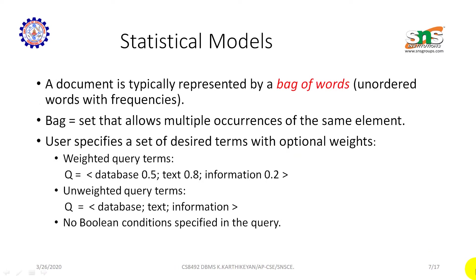The statistical method: a document is typically represented by a bag of words — an unordered set of words with frequency. A bag allows multiple occurrences of the same element. Users specify a set of desired terms with optional weights. For example, a weighted query Q: database 0.5, text 0.8, information 0.2. An unweighted query Q equals: database, text, information. No boolean condition is specified in the query.